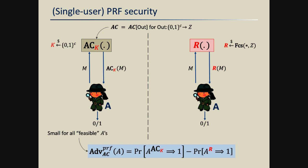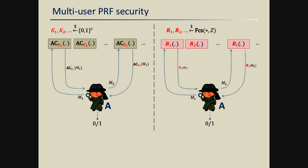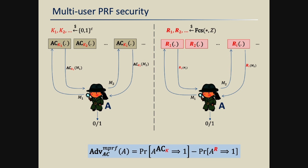We want to extend this notion to the multi-user setting. The standard way of doing so is to consider an a priori unbounded number of instantiations of the construction under independent keys. The distinguisher can access these arbitrarily and adaptively, for example by making queries to one instance, getting an answer, and then deciding to query another instance. We want this to be indistinguishable from a setting where all instances are replaced by independent random functions, and we define a natural multi-user PRF advantage by comparing the probabilities of outputting one in the two settings.